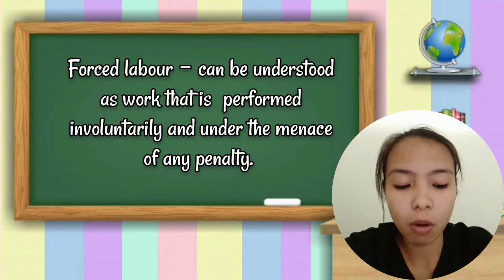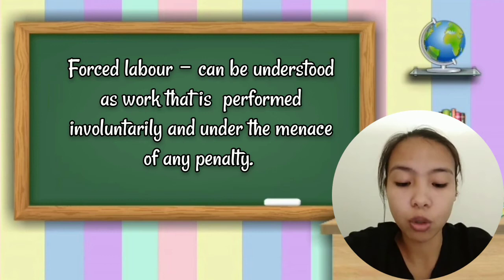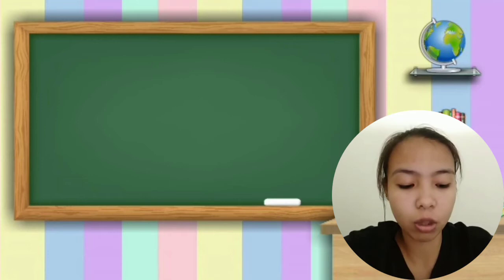Number two: forced labor trafficking. This is a form of modern-day slavery in which individuals perform labor or service through the use of force, fraud, and coercion. Labor trafficking includes situations of debt bondage, forced labor, and involuntary child labor. Number three: debt bondage trafficking.